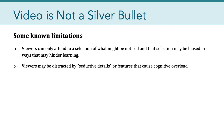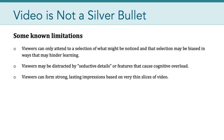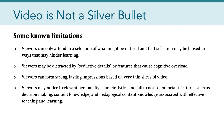Another known limitation is that viewers may be distracted by seductive details or features of the video that cause cognitive overload — they don't necessarily contribute to learning but look fancy and are fun to look at, without actually facilitating understanding. Another limitation is that viewers can form strong, lasting impressions based on very thin slices of video, which can give folks the impression that they understand something just because they remember it, when what they remember may not be representative of the actual concept they are trying to understand. Viewers may also notice irrelevant personality characteristics and fail to notice important features such as decision-making, content knowledge, and pedagogical content knowledge.